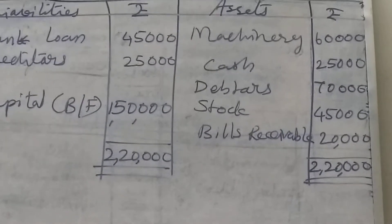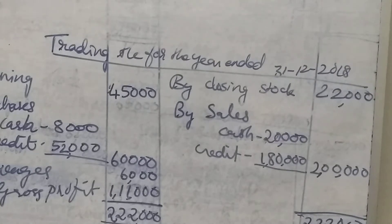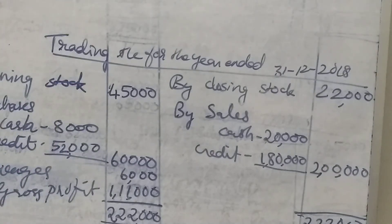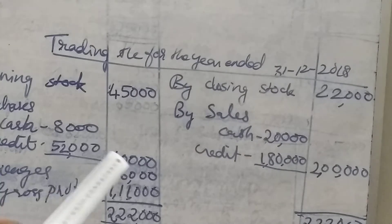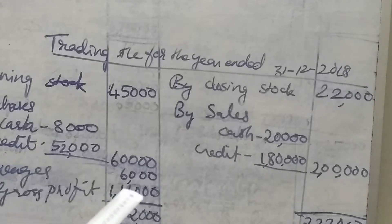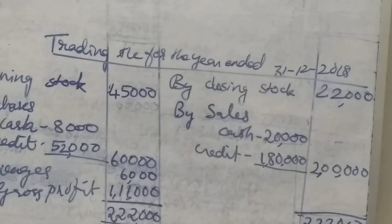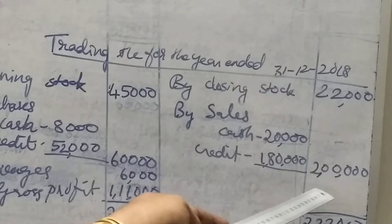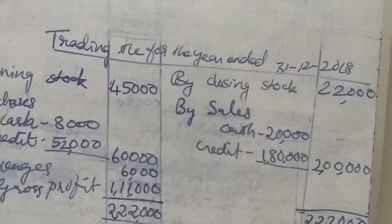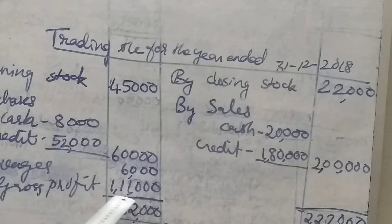After getting this, we can directly go to the trading account. Opening stock is 45,000. Purchases: cash purchases 8,000 and credit purchases 52,000 — add together and write outside as 60,000. Wages: 6,000. On the credit side, closing stock 22,000 given in the question. Sales: cash sales 20,000, credit sales 1,08,000 — total sales 1,28,000. Total credit side: 1,50,000. The balance will be gross profit: 1,11,000.